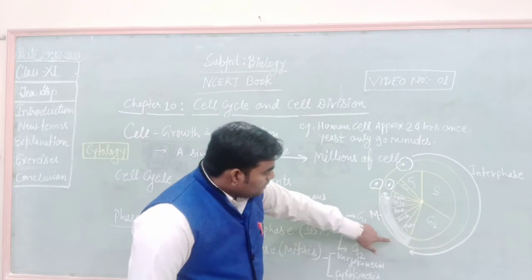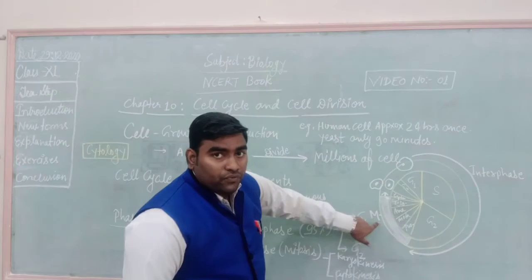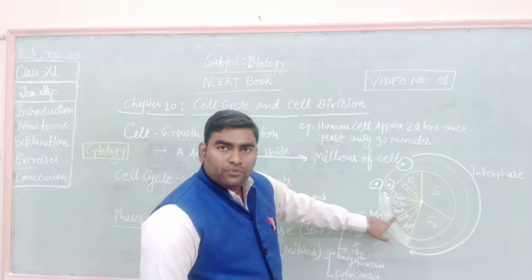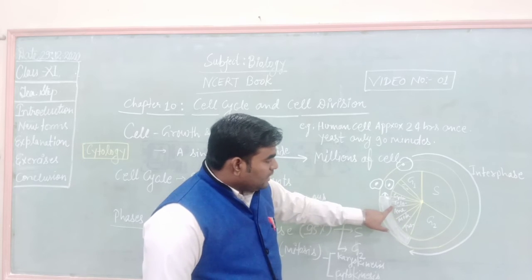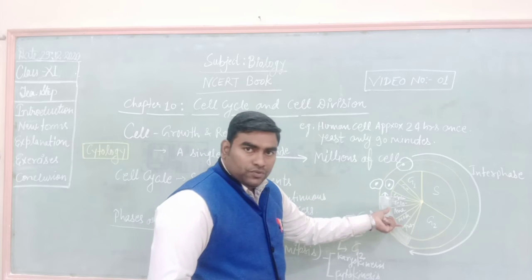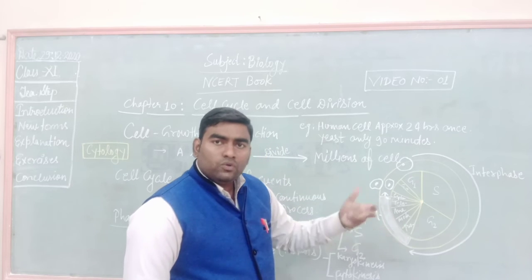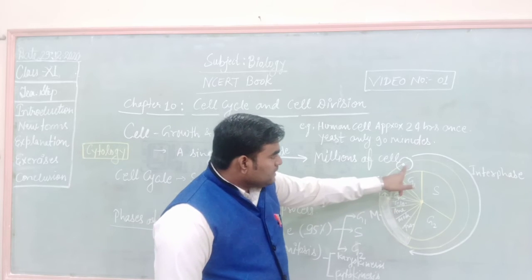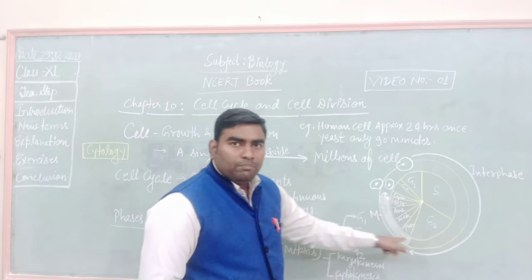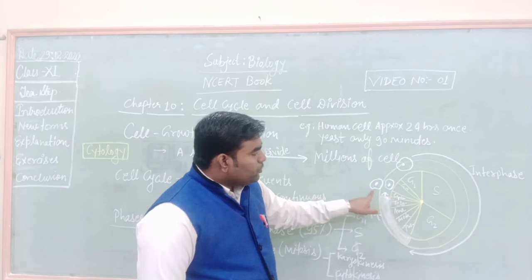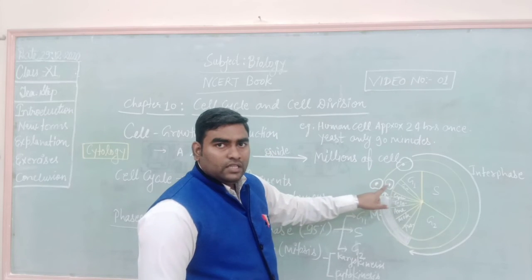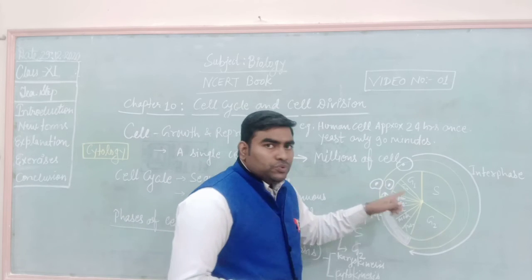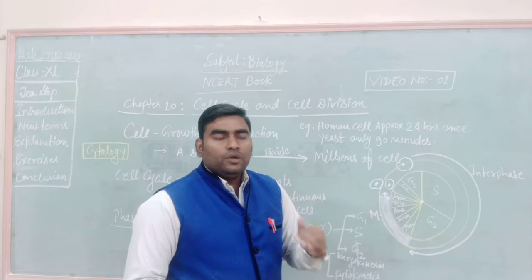And after this, these are the M phase, having their four parts: prophase, metaphase, anaphase, and telophase. After the completion of these, karyokinesis, division of nucleus, the cytokinesis takes place. That is here mentioned, the cytokinesis. One cell, after the completion of complete cell cycle, gets divided into two daughter cells.